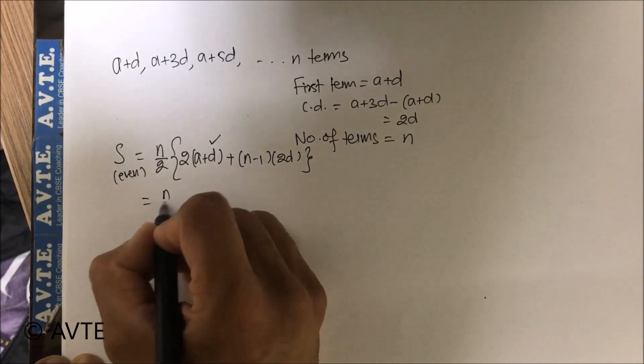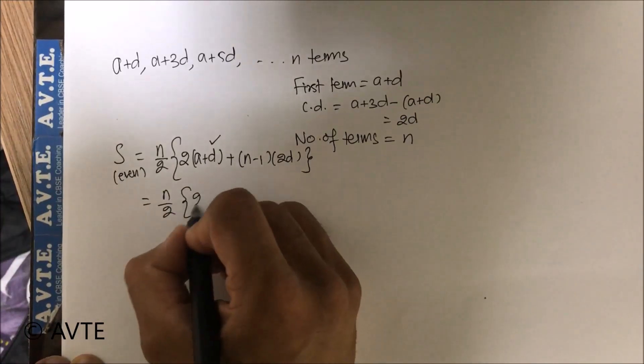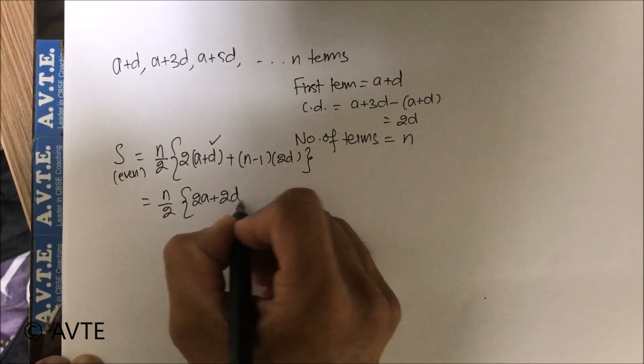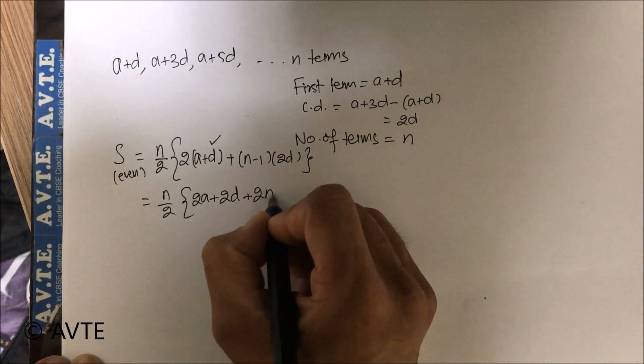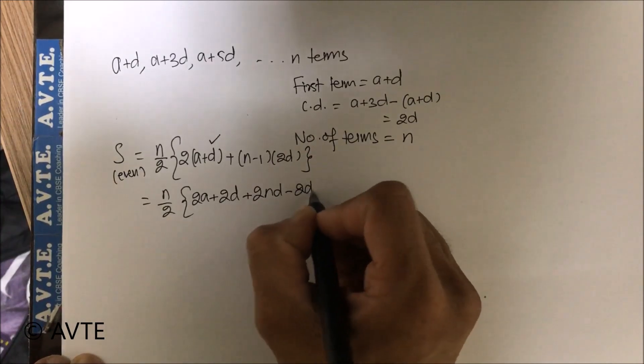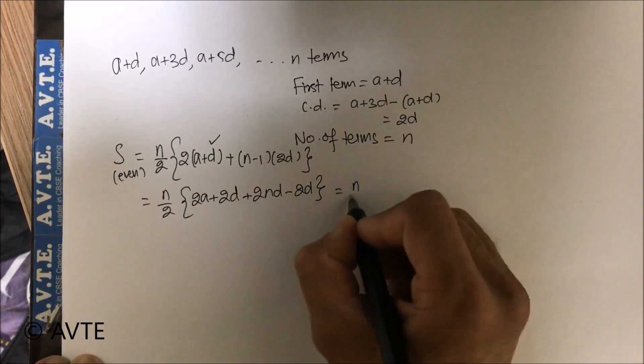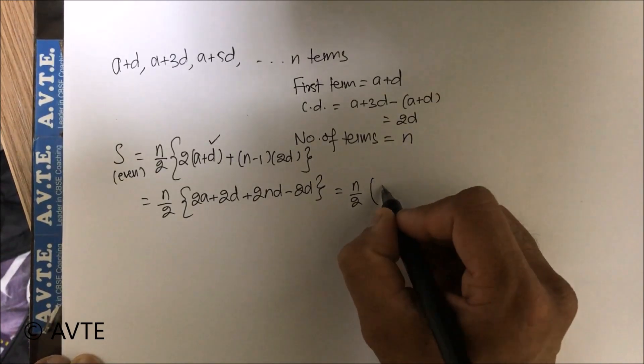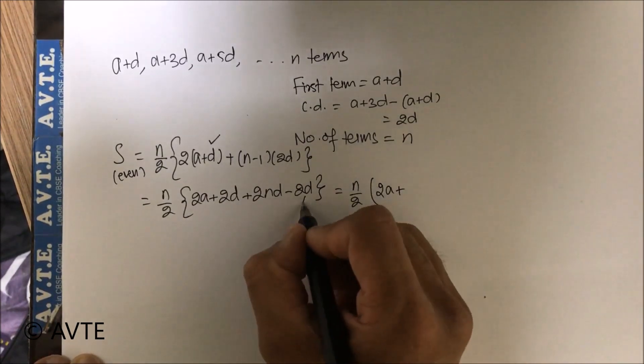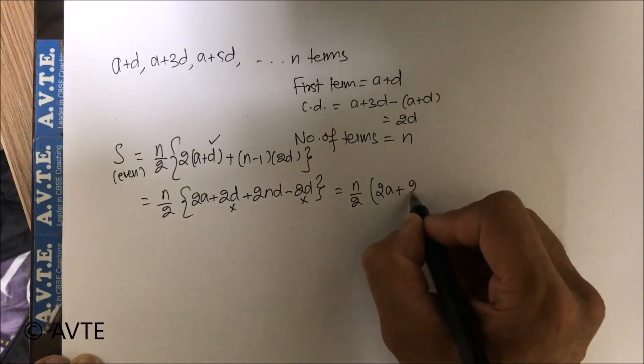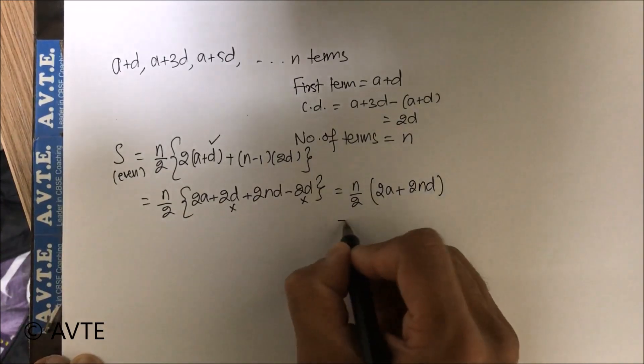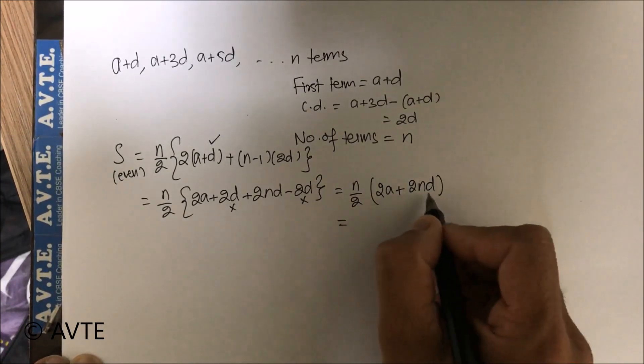Now we are opening the bracket. For junior classes you show each and every step, but if you are in senior classes like in 11th and 12th, you can skip few steps, or in CPT you can skip few steps.